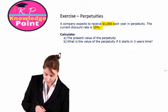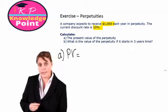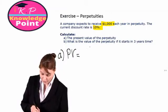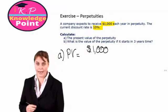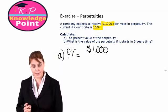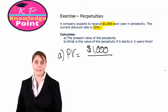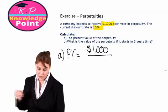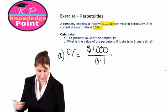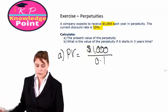The present value is very simply the value of the annual cash flow, so the amount we're going to receive every year, divided by the discount rate, which is 10%, or 0.1.